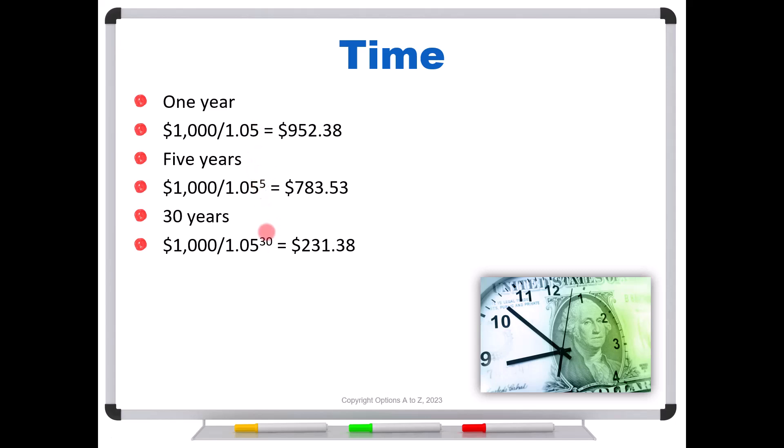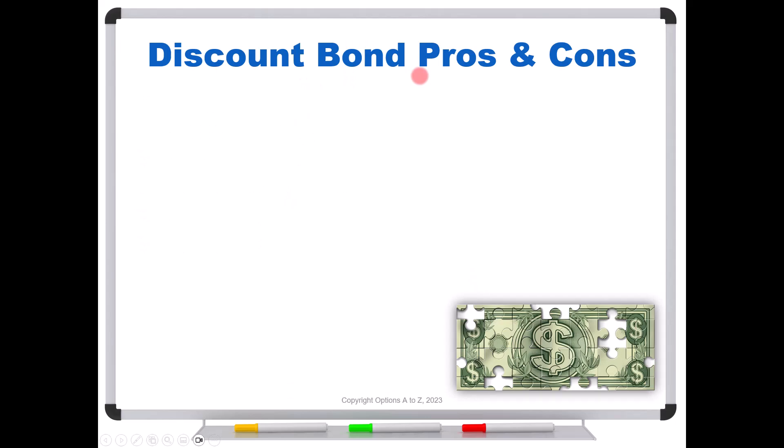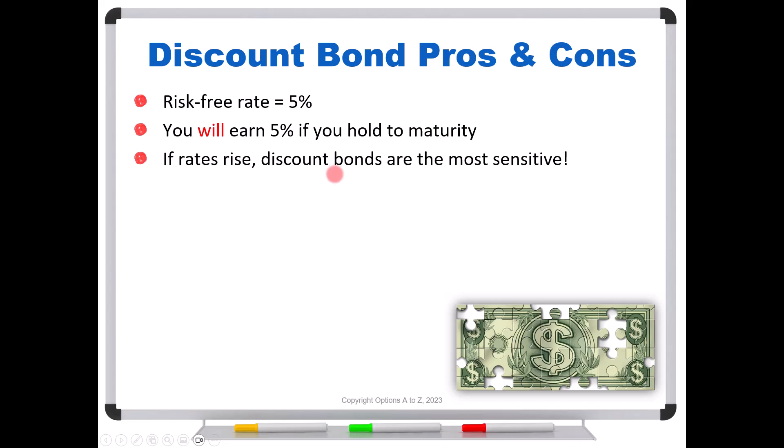Now that you have a basic idea of how a discount bond or zero-coupon bond works, what are some pros and cons? Using the risk-free rate of 5%, one of the big benefits is that you absolutely will earn this stated rate if you hold to maturity. That's the kicker. However, if interest rates rise, discount bonds are going to be the most sensitive. When we do this present value calculation, that entire cash flow, that $1,000 face, sits out there at maturity. So the prices can fall the most.